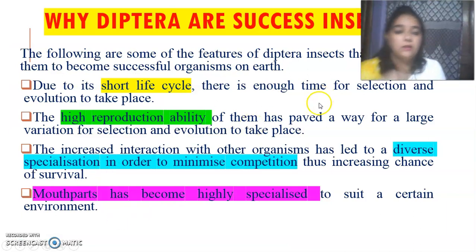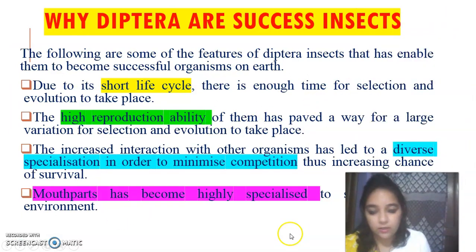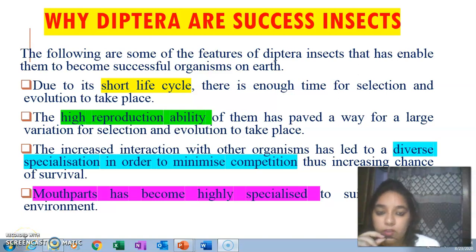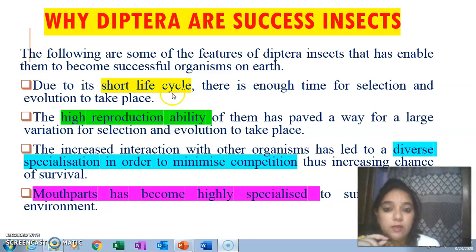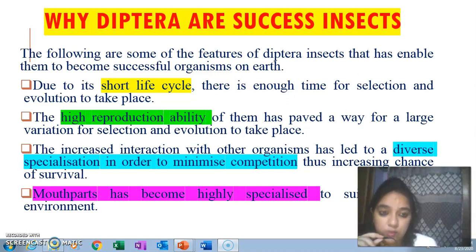Why are Diptera so successful insects? What are the features of Order Diptera that have enabled them to become so successful on earth? Basically because they have a very short life cycle, they get enough time for selection — whether positive or negative selection — so that favorable conditions can be chosen and evolution can take place.